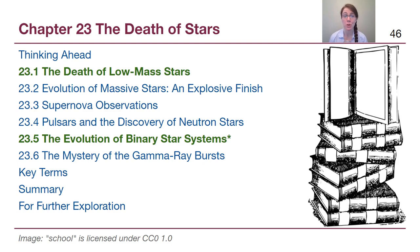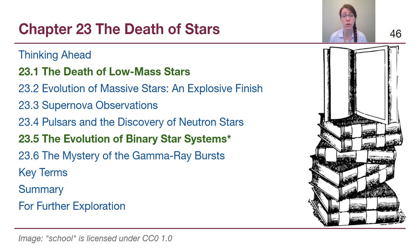Welcome back to Module 5 and welcome to Chapter 23. In this first video from this particular chapter, we are going to focus on how low-mass stars like the Sun die. In order to have a complete conversation about those low-mass stars, we are also going to include something that can happen if they are in a binary system, so that we have a full understanding of the different things that can happen to low-mass stars.